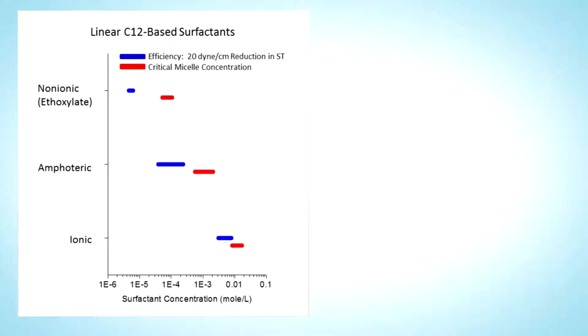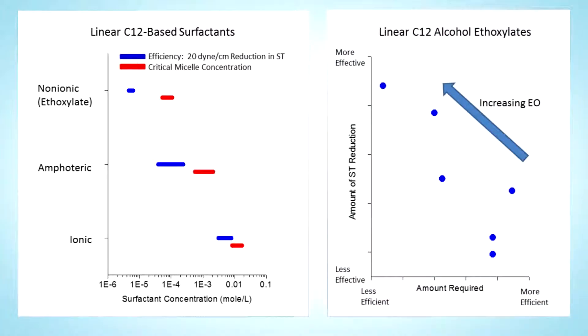Non-ionic surfactants, because they are uncharged and compact nearly ideally at interfaces, are relatively efficient, but their surface tension curves can vary considerably with surfactant structure.